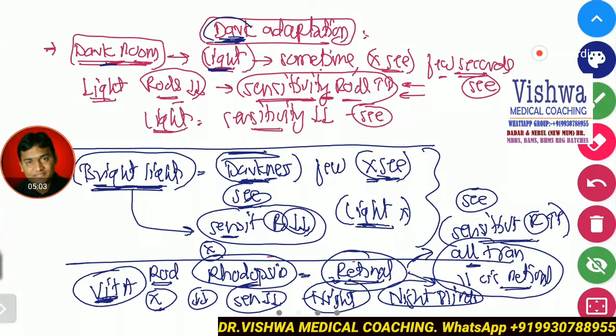Let me repeat this again because this is always asked in the viva. What is light adaptation? When you are in a dark room and somebody switches on the light, you are not able to see because there is a glare. This is because in the dark room, the sensitivity of the rods was high. When light is given, it causes glare. But after a while, the sensitivity of the rods reduces again and you can see.